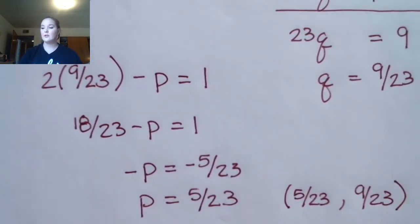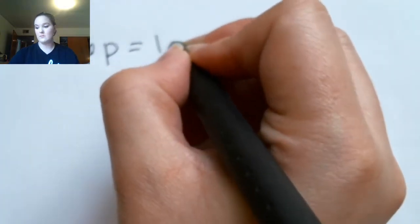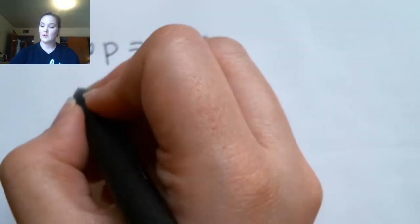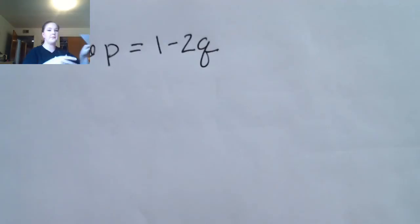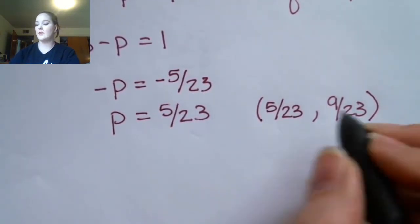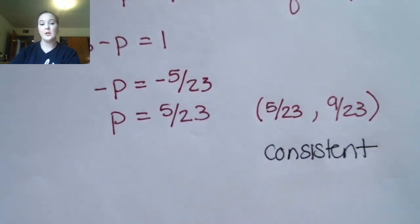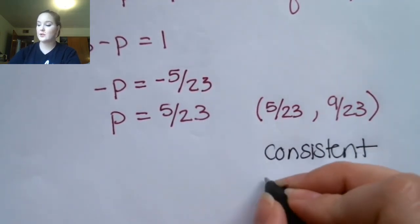Now let's look at part b of this example. Consistent, inconsistent, dependent, independent: there is a solution, so we know it's consistent, and two totally different equations means we know it's independent.